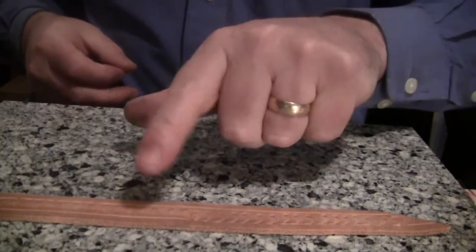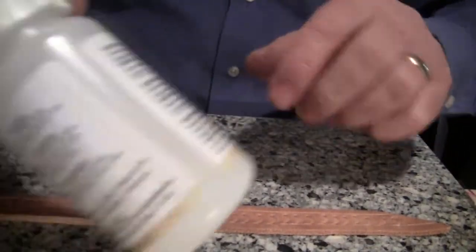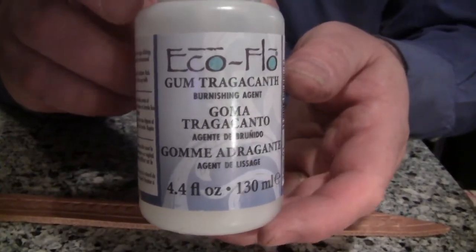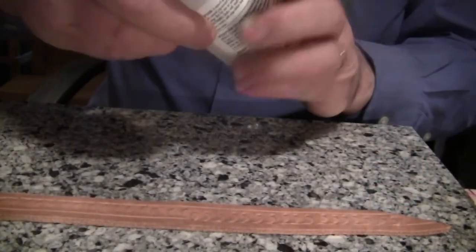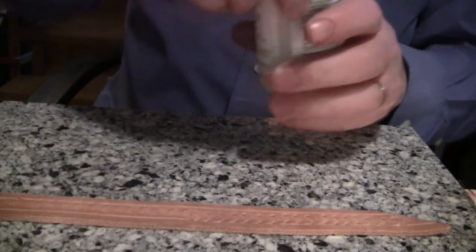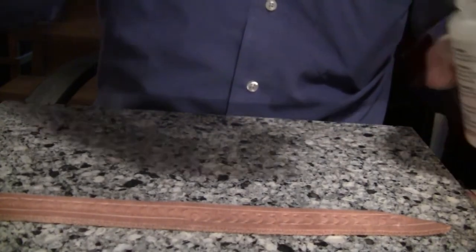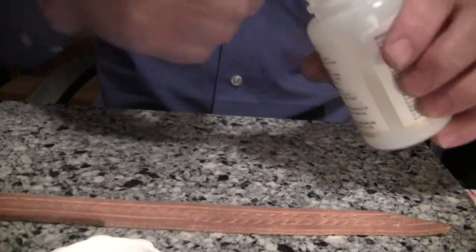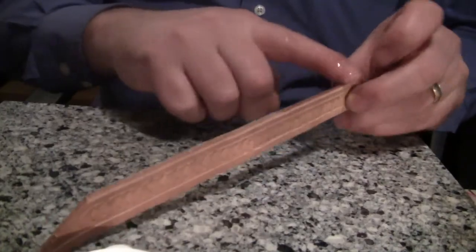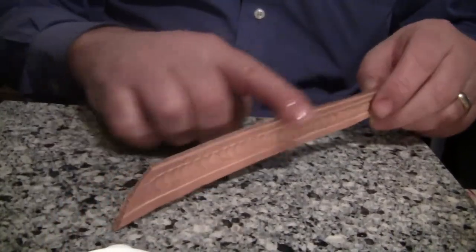So I need to—there it is. I cannot pronounce this stuff, but... Tragacanth gum, I don't know. I just put it on my finger. Put a liberal amount on your finger. And I'm going to dress the edge.